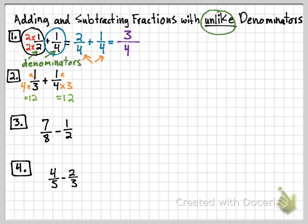So I'm going to multiply the one-third by four so you can get 12, and the one-fourth by three so you can get 12. If I follow the rules, if I multiply the bottom by three, I have to multiply the top by three. Over here, if I multiply by four, I have to multiply the top by four. So this part of the fraction becomes: four times one is four, four times three is 12.